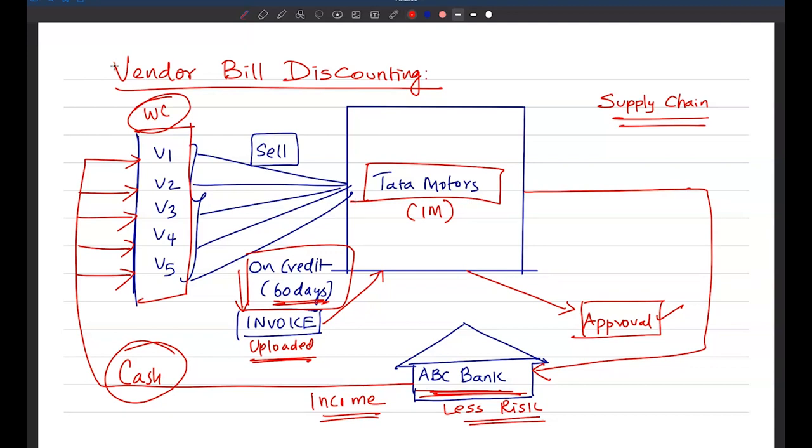And it is also really safe for the bank because for the bank there is no much of complexities. There is no mortgages, there is no detailed assessment. For the bank it is going to be an assured cash flow from the industry major on the due date. And in turn bank is also helping all these vendors to carry out their activities. So this is the flow of vendor bill financing or vendor bill discounting. Thank you so much.